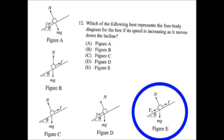Now, how do we know it's E? Well, we are moving down the incline because friction is up the incline. Friction always acts against the direction of sliding, and we have an increasing speed because it's net force down. Net force is down the incline.